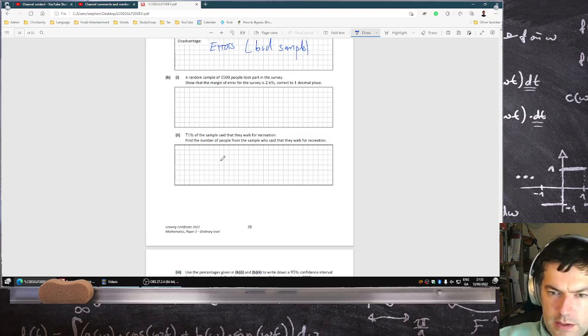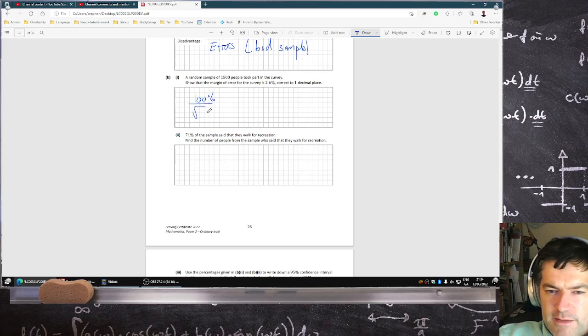So what you do, the formula is 100% over root n. So if I type that in, that is indeed, yeah, root n where n is 1500. So I do get 2.58 and so on. To one decimal place, it's 2.6%.